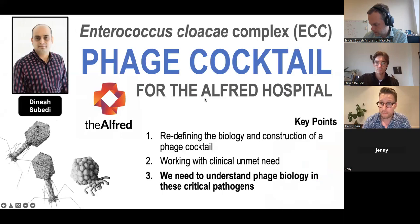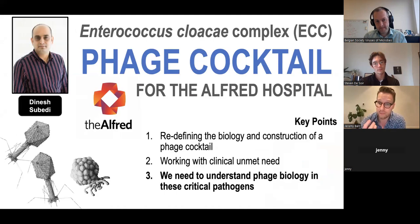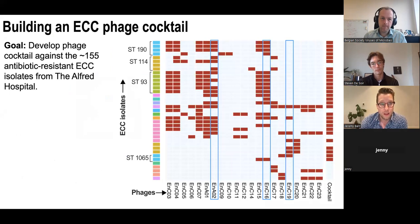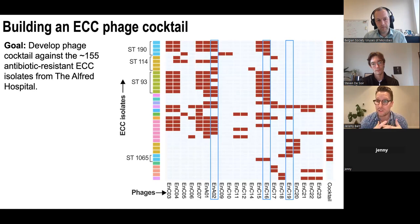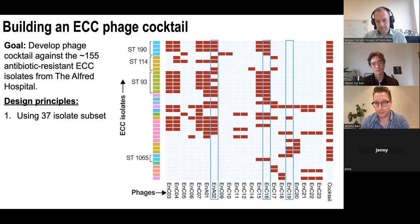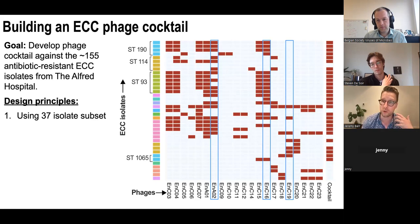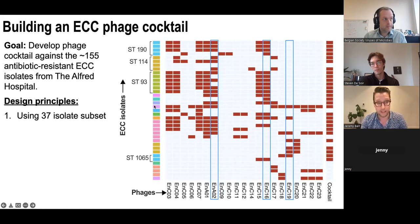Dinesh, a postdoc in our group for about three to four years, has really led all of this work. The goal is designing and developing a phage cocktail to meet this unmet clinical need. We had a few design principles: since we had about 150 isolates, we chose a representative subsection of 37 — the most pathogenic and prominent sequence types, but also a diverse collection. These three most prominent sequence types are shown at the top with a large diversity of other genetically distinct clades in this ECC population.